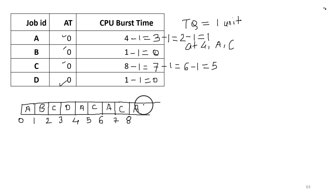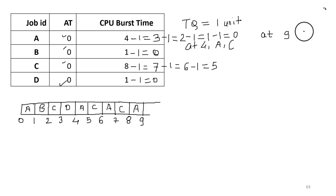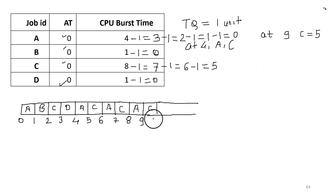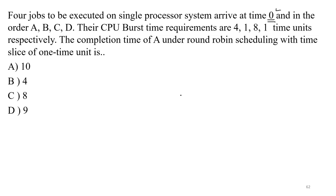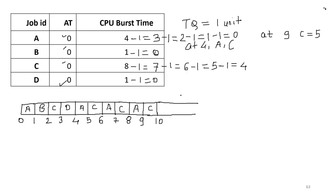After C, A will get the CPU for one unit; total time is nine. The remaining time of C is four and the remaining time of A is zero — meaning A is complete at time nine. At time nine there is only one process remaining, that is C, which requires five more units to complete. C will continue getting the CPU; total time reaches ten and the remaining time of C is four. The completion time of A is nine.